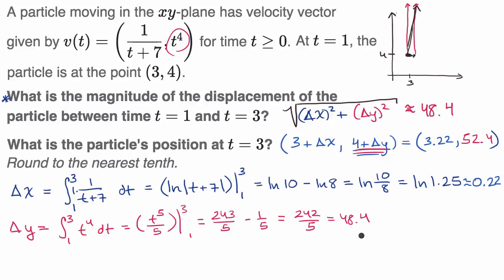You might notice the total displacement magnitude, 48.4, is the same as our Δy. The reason is that the magnitude was slightly more than 48.4, but rounds to 48.4 because Δx was so small (only 0.22). In general, the magnitude of displacement will be larger than either Δx or Δy alone — this result is specific to this problem where Δx was negligible compared to Δy.